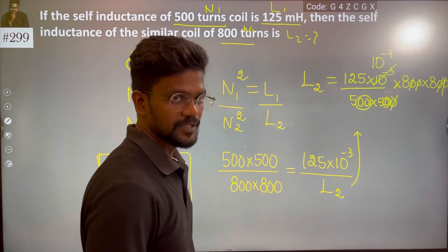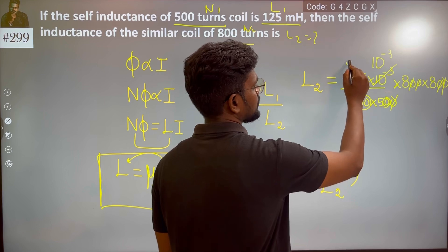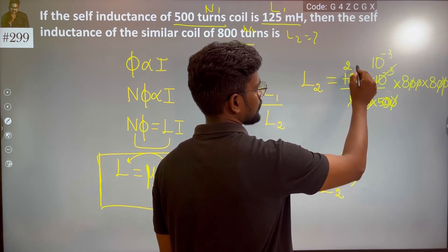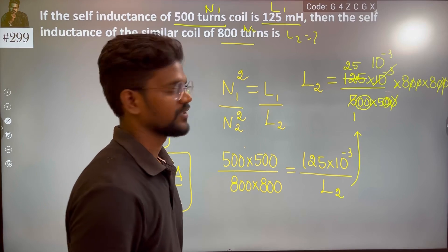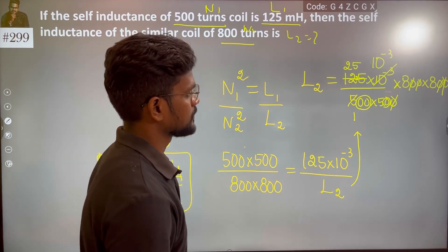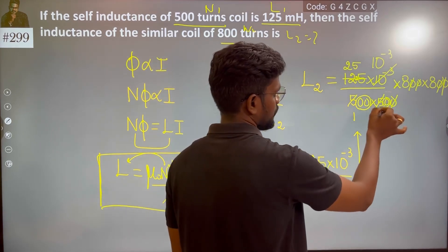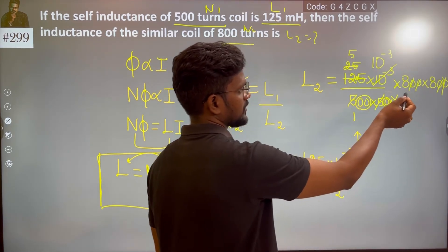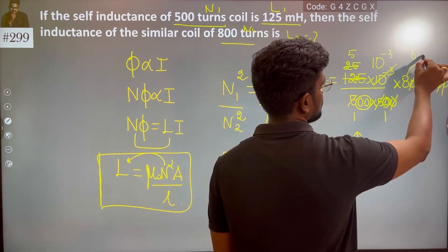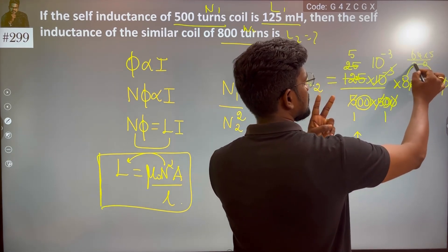Where is that? 5 times 5 is 25, 10, 5 times 5 is 25, 8 times 8 is 64.